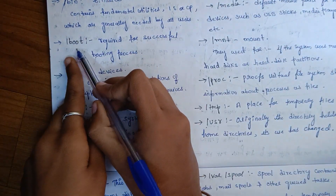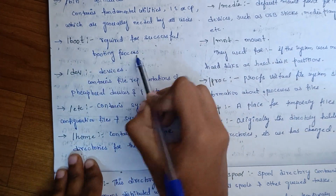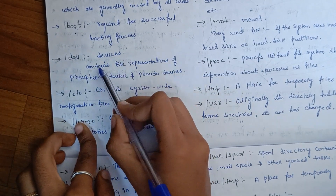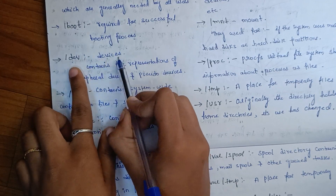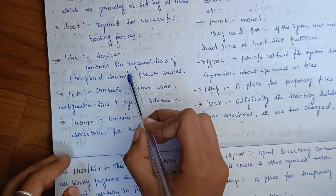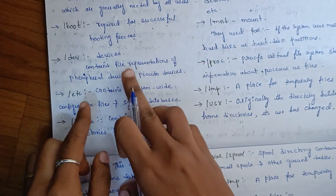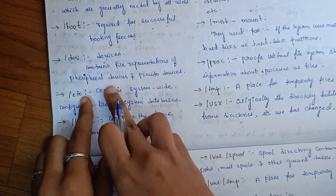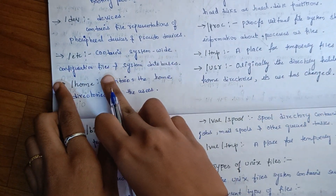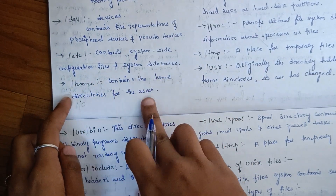Next to BIN is slash boot. Slash boot contains files required for a successful booting process. Slash dev stands for devices — it contains file representations of peripheral devices and pseudo-devices. Slash etc contains system-wide configuration files and system databases. Slash home contains the home directories for users.